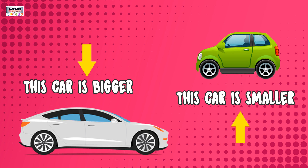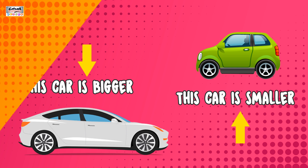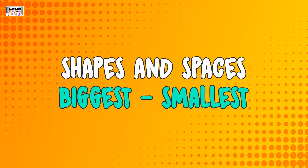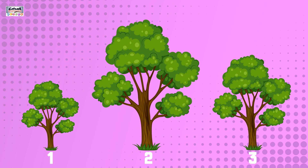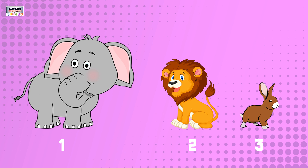Shapes and spaces: biggest and smallest. Let's find out what is biggest and what is smallest. From these three trees, which is biggest? Yes, this second tree is biggest.